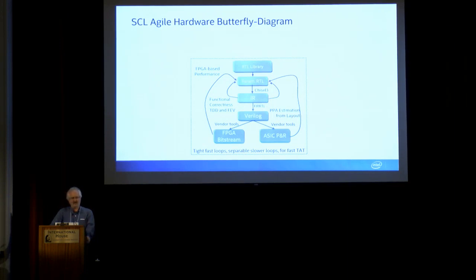Then you can go on the left side, which is the functional correctness side, or you can go on the right side, which is the estimation side. There's a short loop, just the people like testers for functional correctness, and then a longer loop.